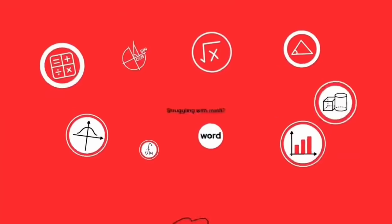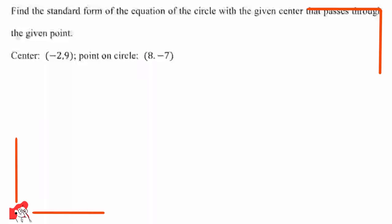Welcome to the Goth Math Class — let's make math so easy! Here is the question: find the standard form of the equation of a circle with the given center that passes through the given point. Center: (−2, 9); point on circle: (8, −7). Let's organize the information we get from the question.